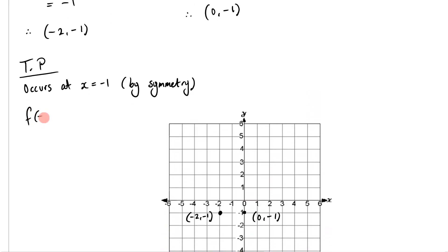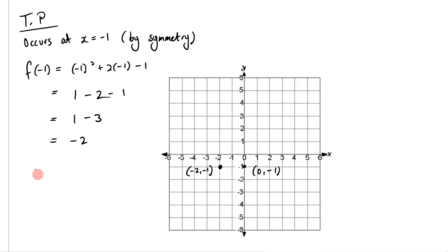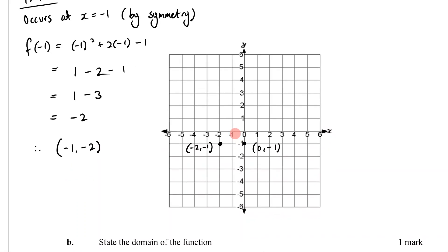Now I need the corresponding y-value. f(-1) = (-1)² + 2(-1) - 1, which equals 1 - 2 - 1 = 1 - 3 = -2. So the turning point is (-1, -2). I can now plot that on the graph — and as expected, it sits at x = -1, between the two points with y = -1. I'll label it (-1, -2).